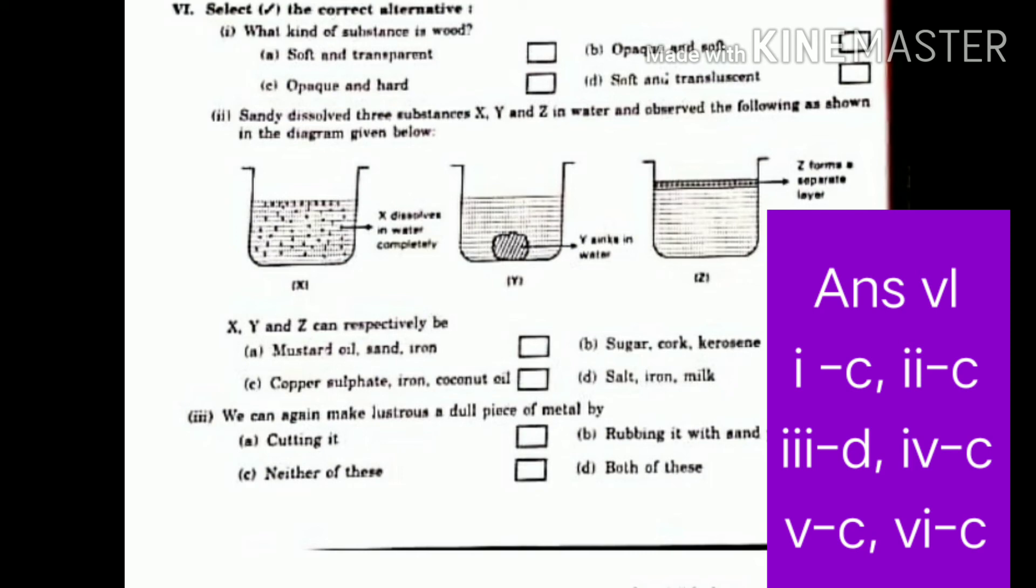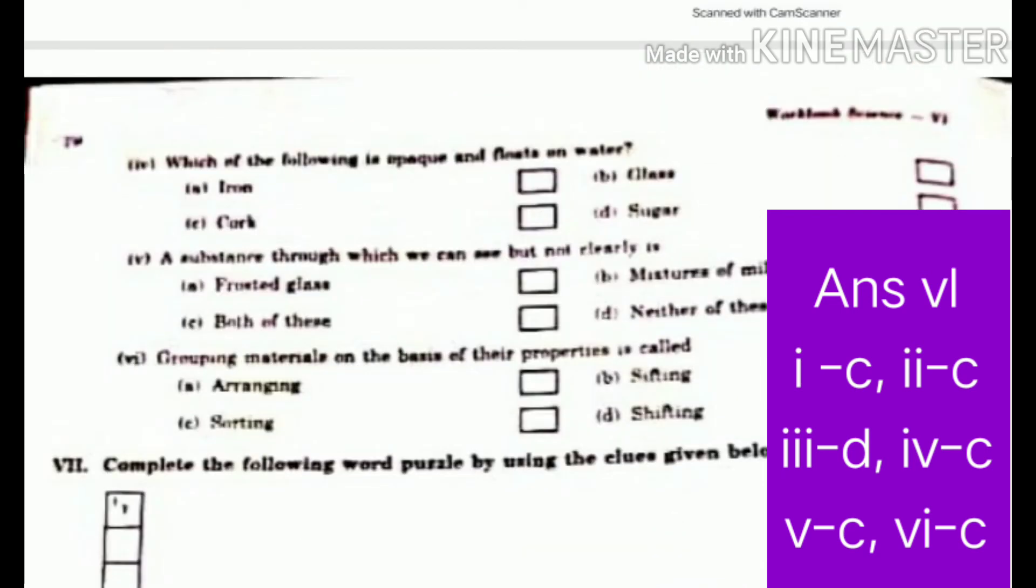Third. We can again make lustrous a dull piece of metal by cutting it, rubbing it with sandpaper, neither of this or both of this. So both of this is correct answer. Fourth. Which of the following is opaque and floats on water? C. Cork.